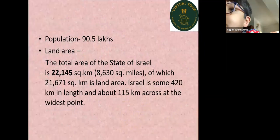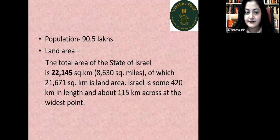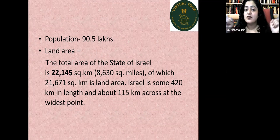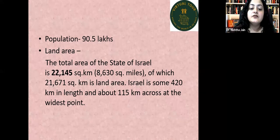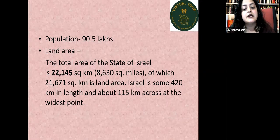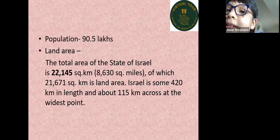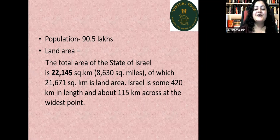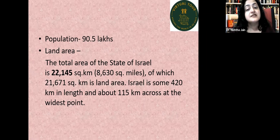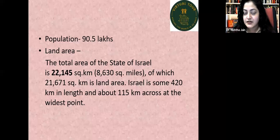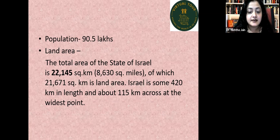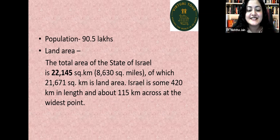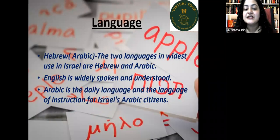The population of Israel is 90.5 lakh only. The total land area of the state of Israel is 22,145 square kilometers, of which 21,671 square kilometers is just the land area. It's a thin country, so not many people. Israel is about 420 kilometers in length and 115 kilometers across at its widest point.